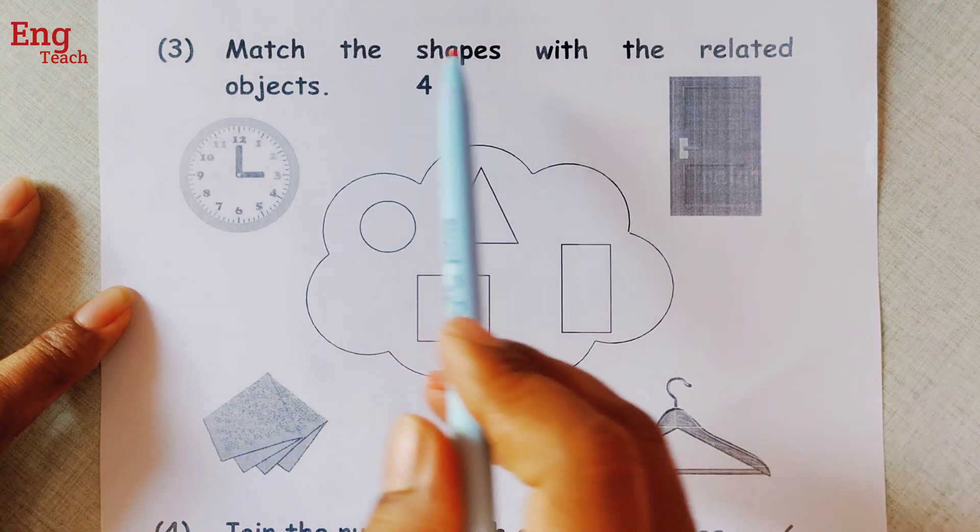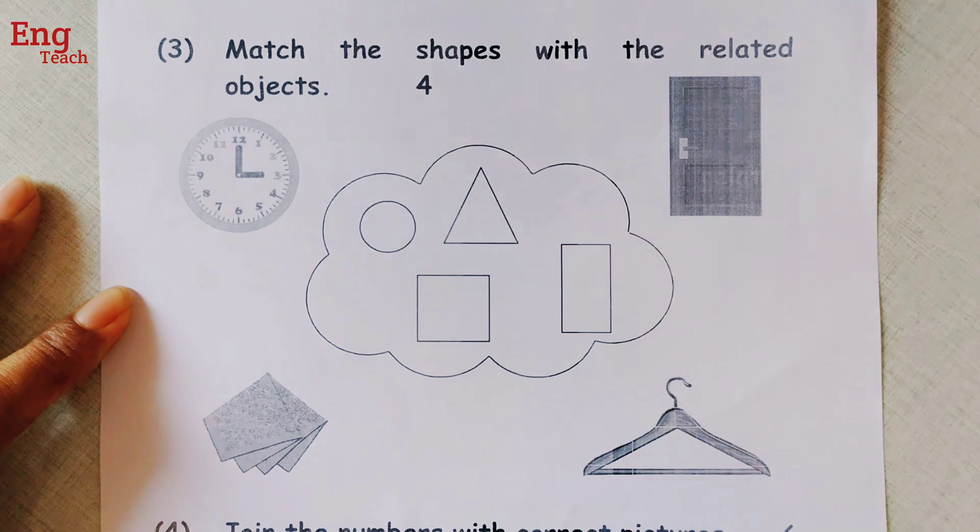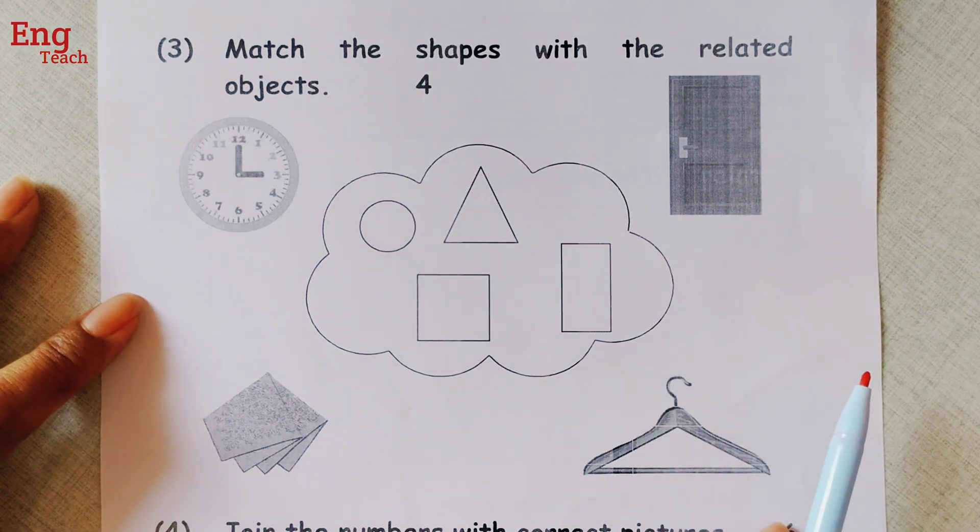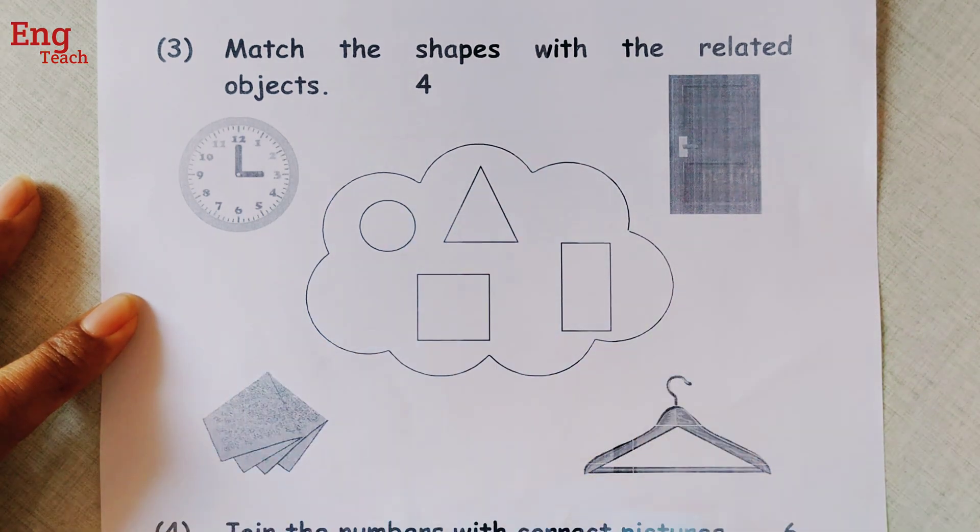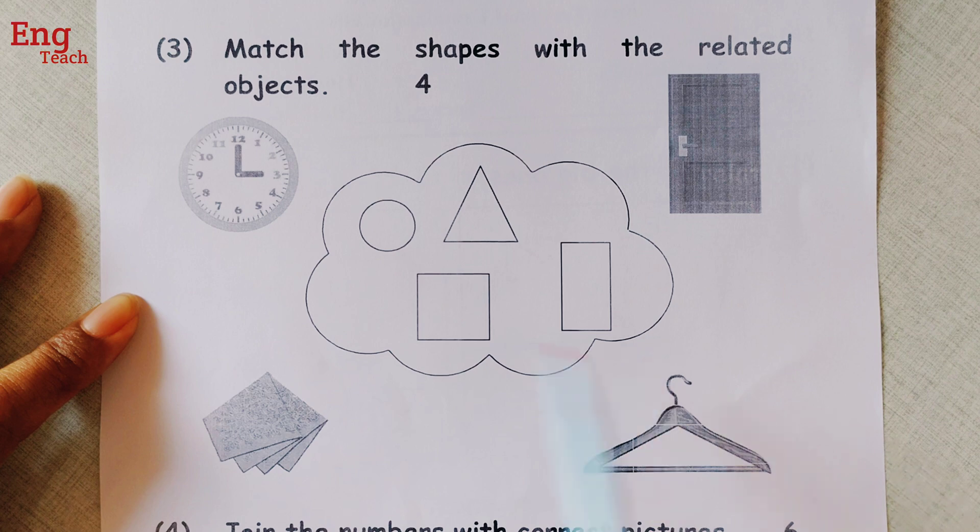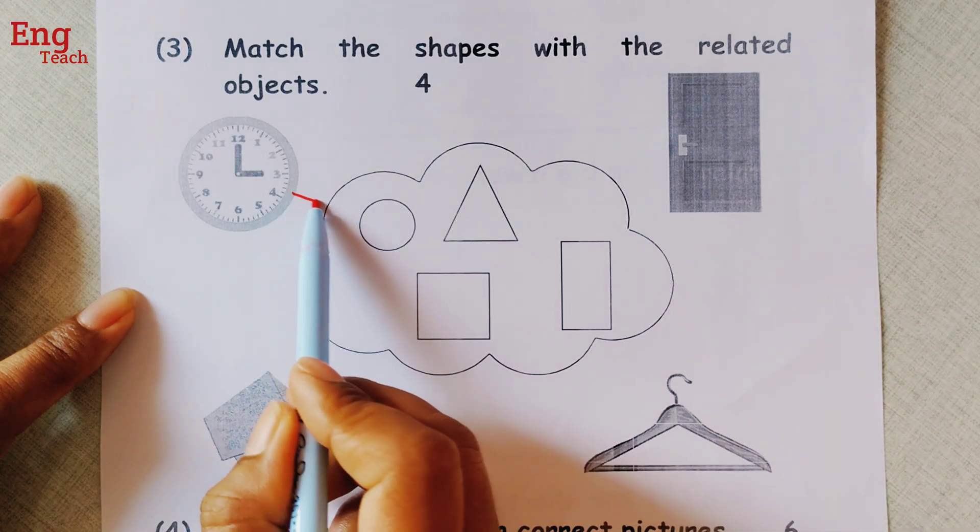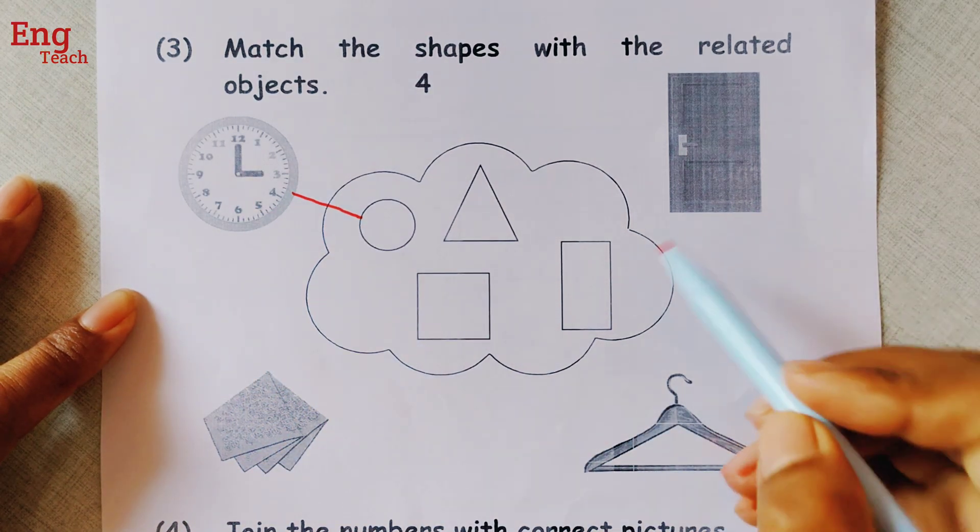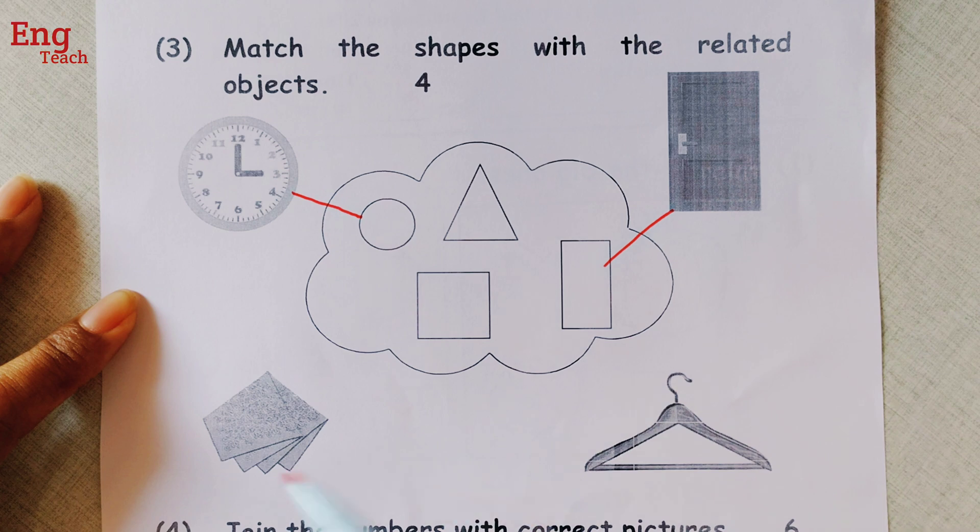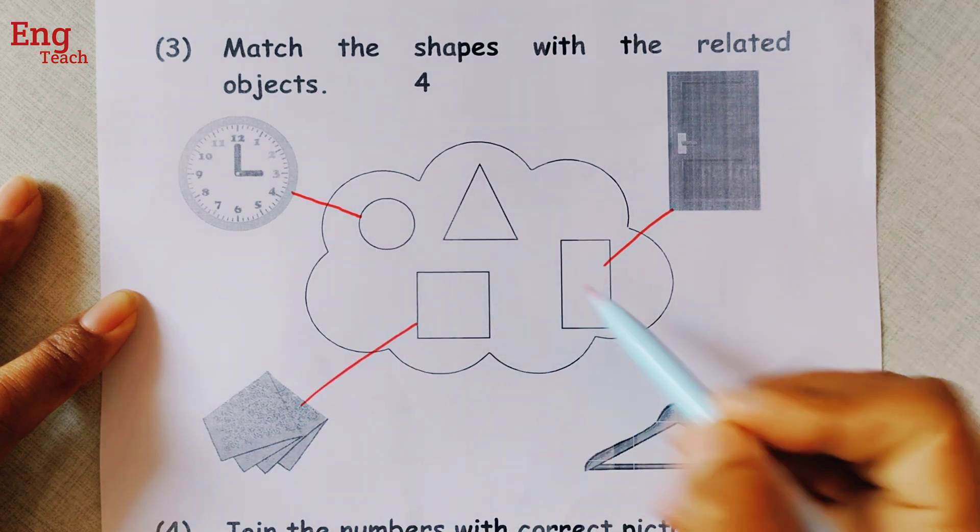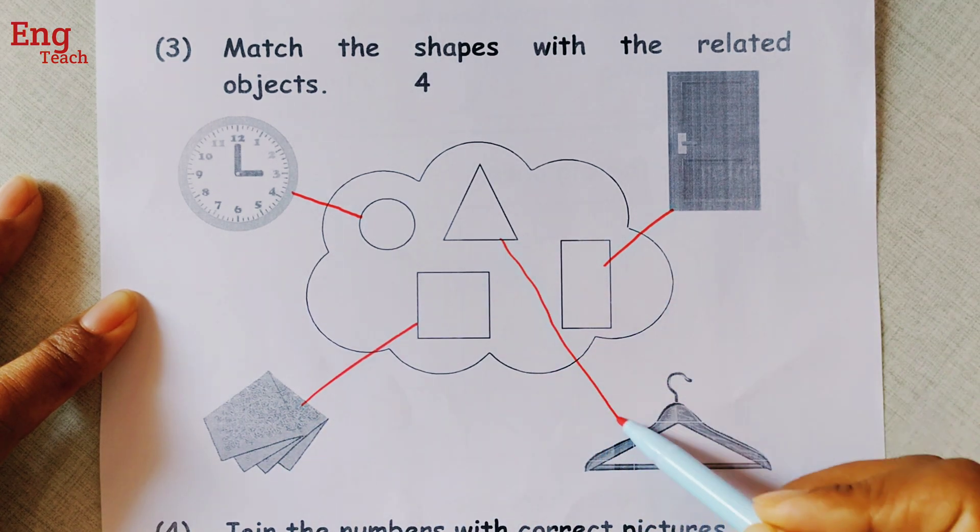Now number 3, match the shapes with the related objects. Now we have to match the shape, this shape with the related objects according to their shape. So this was circle, we have to match it with it. And here rectangle, square, and then after hanger. This one.